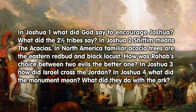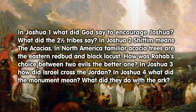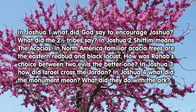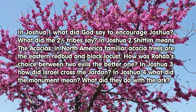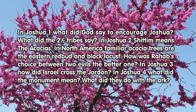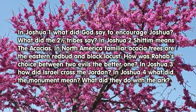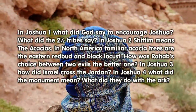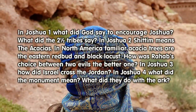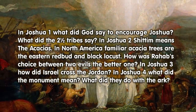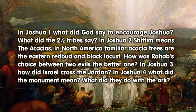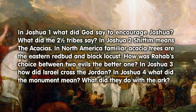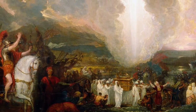What did the two and a half tribes say? In Joshua 2, Shittim means 'the acacias.' In North America, familiar acacia trees are the eastern redbud and the black locust. How was Rahab's choice between two evils the better one? In Joshua 3, how did Israel cross the Jordan? In Joshua 4, what did the monument mean? What did they do with the ark?